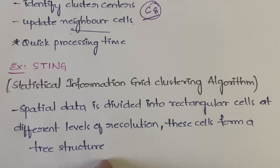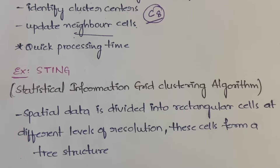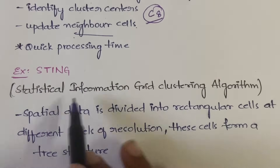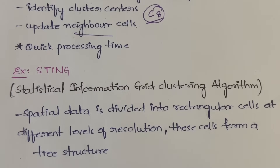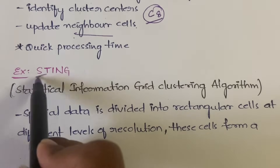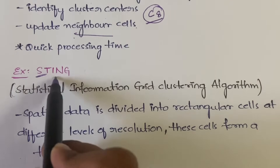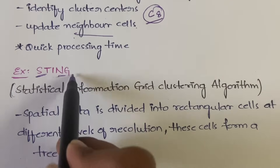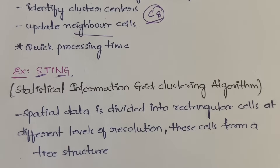The example we are going to discuss is STING — the Statistical Information Grid clustering algorithm. STING stands for Statistical Information Grid clustering algorithm. The same process that happens in grid clustering is followed here as well.